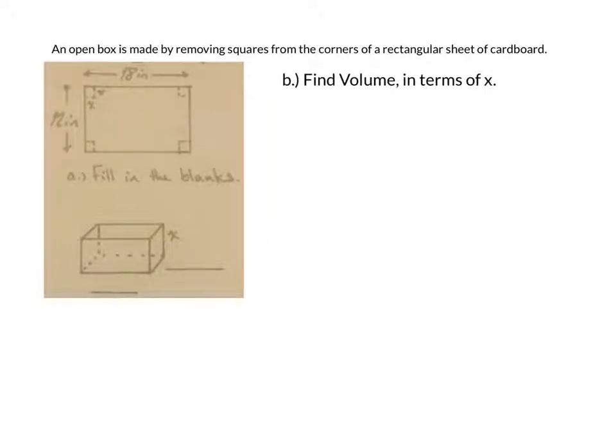The box problem here. An open box is made by removing squares from the corners of a rectangular sheet of cardboard, and then we fold up the sides to make a box.